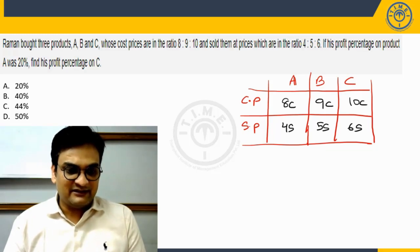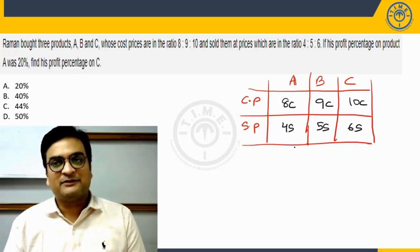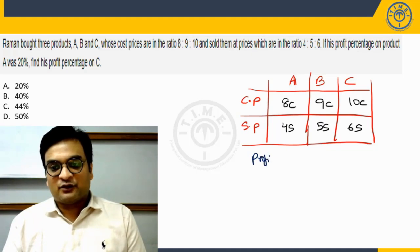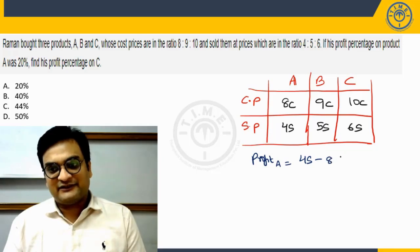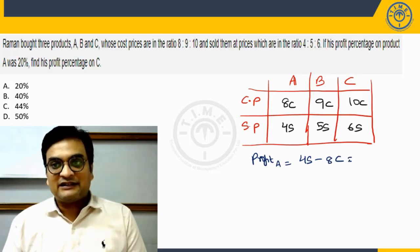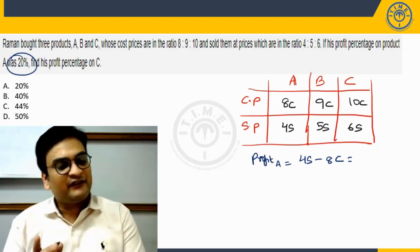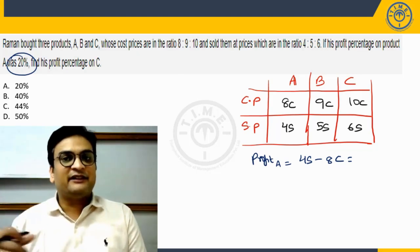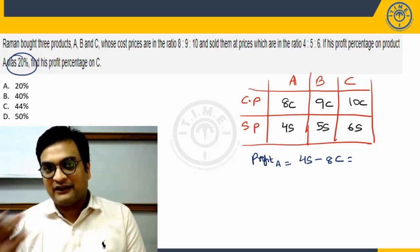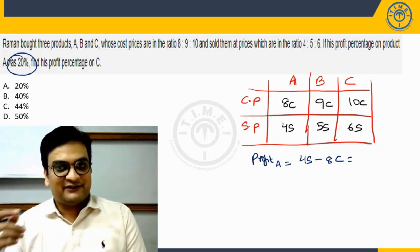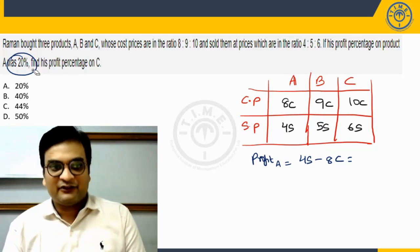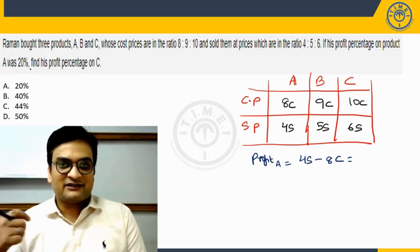Now let's do some calculations. When you go for the profit percentage on A, how would we calculate the profit percentage on A? It's nothing but the profit value of A. So profit of A is going to be selling price of A minus the cost price of A. This is a profit and this is given to be 20 percent. Now please note in your profit and loss, profit percentage is invariably calculated on the cost price always unless otherwise specified.